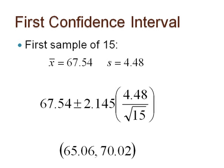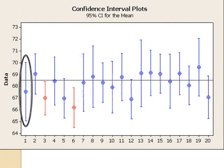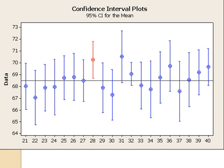My t-confidence interval for the population mean is 65.06 to 70.02. We see on the graph that this interval, which is circled, captures the true mean of 68.495. This graph and the next 4 show the first 100 confidence intervals built from the first 100 samples of size 15. The confidence intervals in red did not capture the population mean of 68.495.